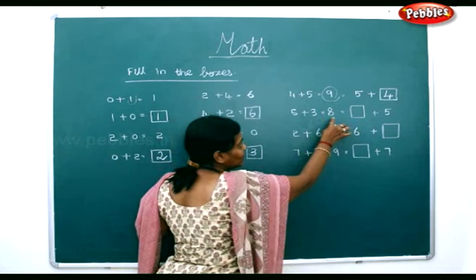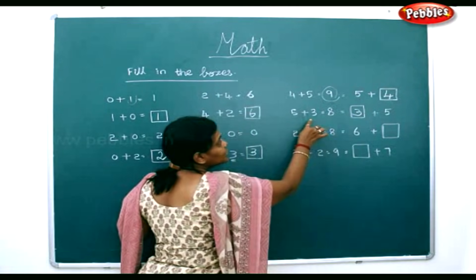Now 5 plus 3 is equal to 8. 3 plus 5 also is equal to 8.